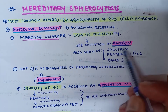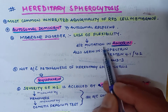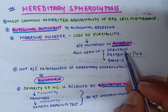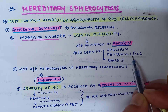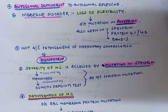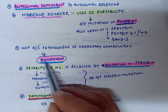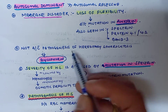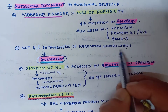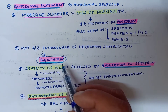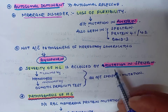Mutations can also be seen in spectrin, protein 4.1, protein 4.2, and band 3. We must remember that glycophorin is not associated with the pathogenesis of hereditary spherocytosis — glycophorin is not responsible in the pathogenesis of hereditary spherocytosis.